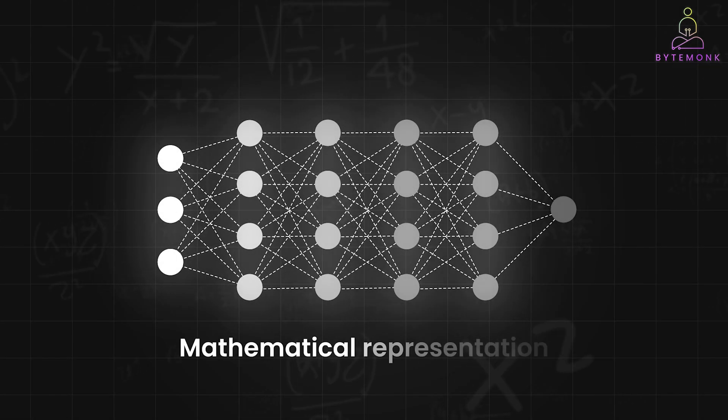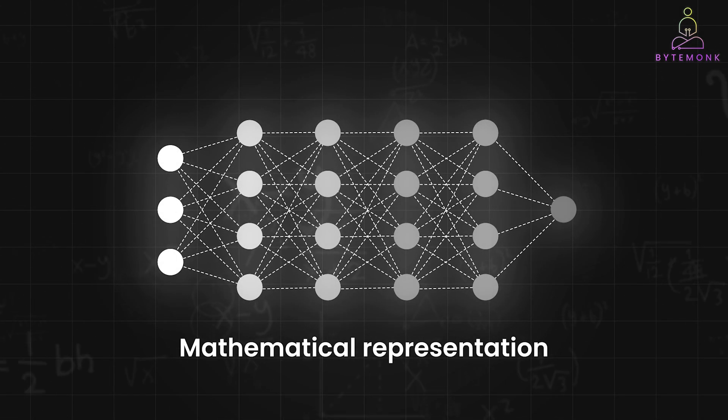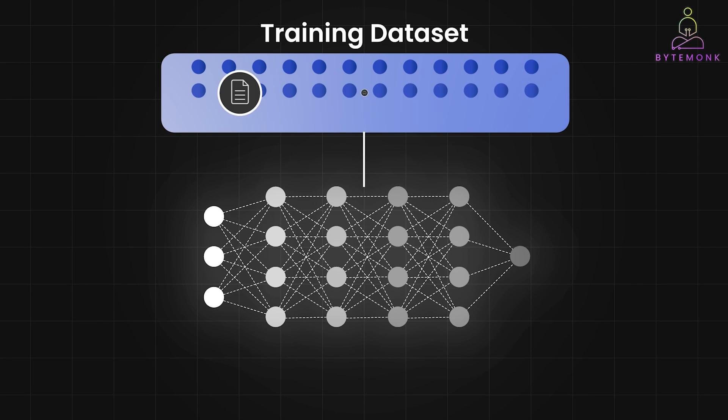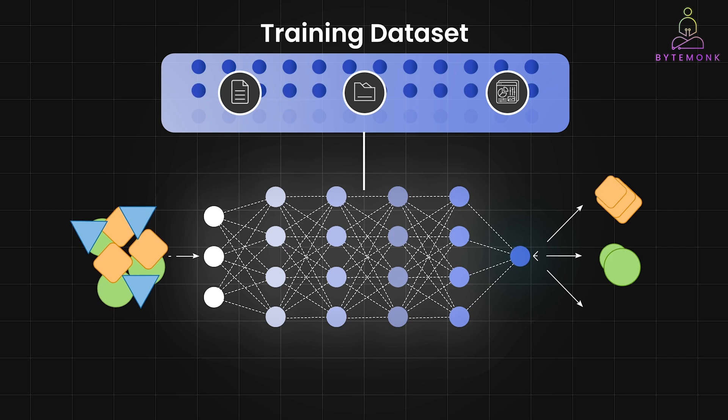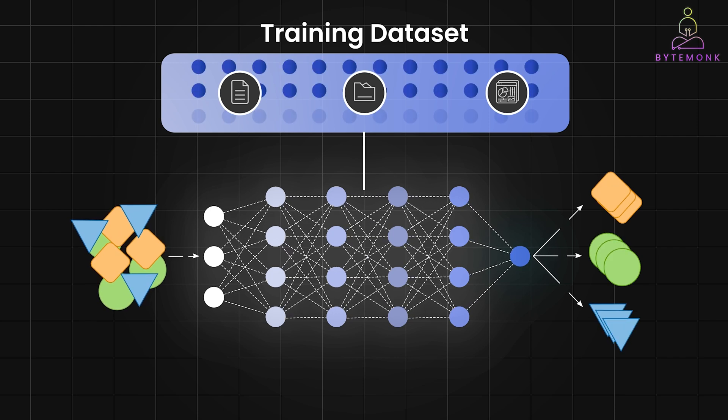A model in machine learning is a mathematical representation of a system or process. It is built using a training dataset to learn the underlying patterns and relationships in the data. Once trained, the model can be used to make predictions or decisions on new unseen data.